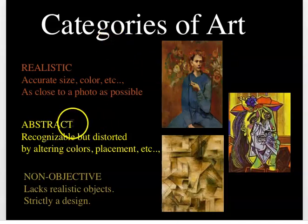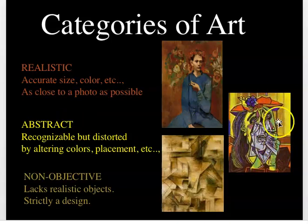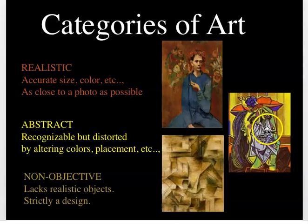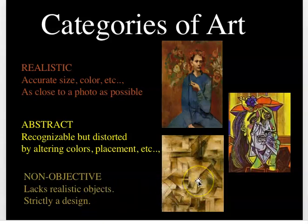Artwork could also be in the category of abstract, meaning it's recognizable but with distortions. Even cartooning comes into abstraction — so recognizable, but really distorted. Non-objective artwork is mostly about the elements and principles, and it lacks a strict design or pattern.